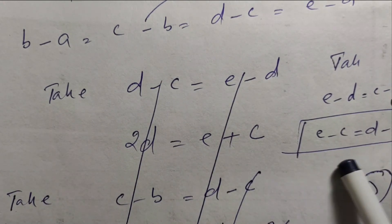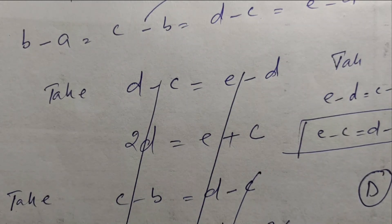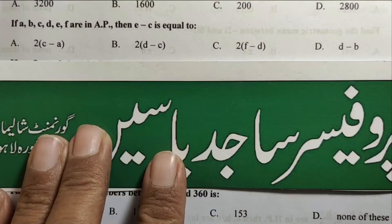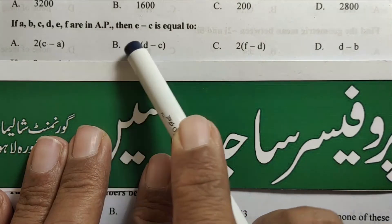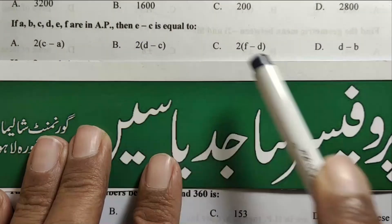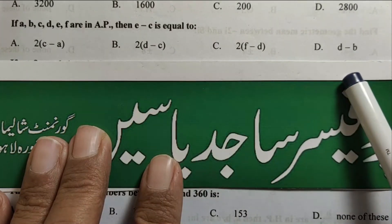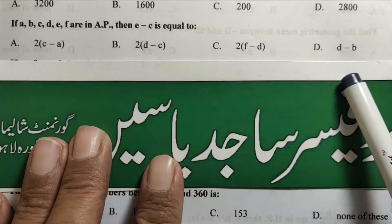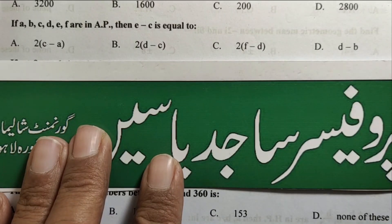Therefore E minus C equals D minus B. Option D is correct. If A, B, C, D, E, F are in arithmetic progression, then E minus C equals D minus B. Option D is the correct answer.